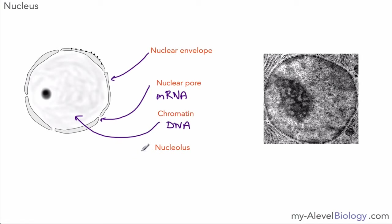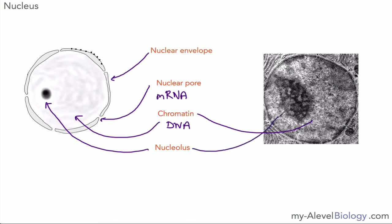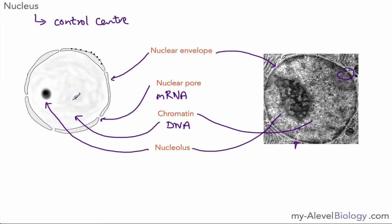Chromatin is basically DNA that hasn't been structured into chromosomes — this is usually when the cell is not yet dividing. The nucleolus is a structure within the nucleus with the job of producing ribosomes. On the micrograph you can see the chromatin as a grainy structure, and the nucleolus is visible too. The nucleus acts as the control center of the cell — it codes for proteins via the DNA, and these proteins help the cell carry out its functions.